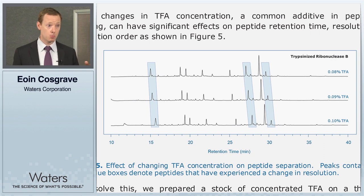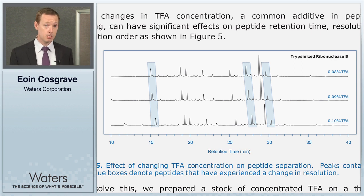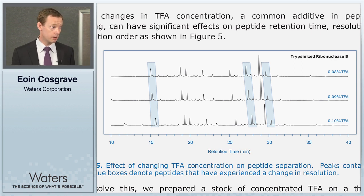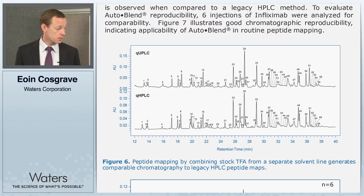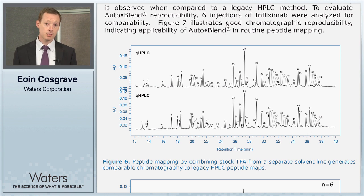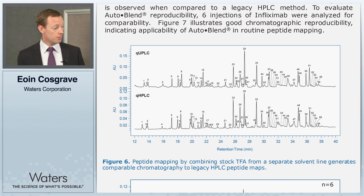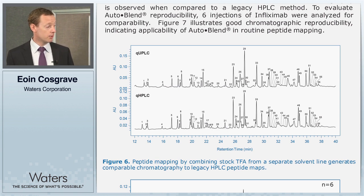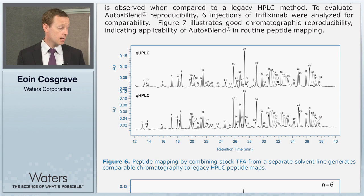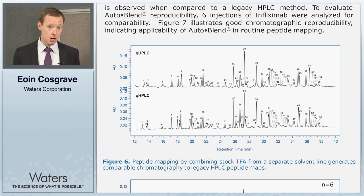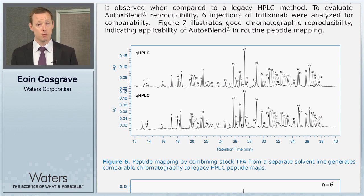When you add acidic modifiers to your mobile phases, tiny adjustments can influence the final concentration. To remove that variability, we include TFA on a third solvent line. When we do this, the results shown in figure six use a tryptic digest of infliximab, a commercially available monoclonal antibody, tracking 65 different peaks. Using AutoBlend to deliver TFA as a third solvent line, we find near-identical chromatography when comparing to the legacy HPLC instrument, with great agreement in relative retention times between the legacy instrument and the H-class Bio delivering TFA via AutoBlend.